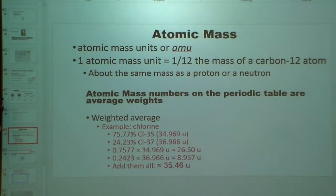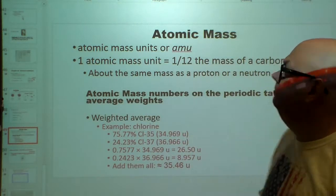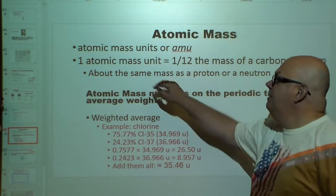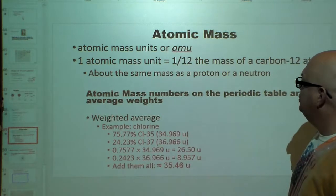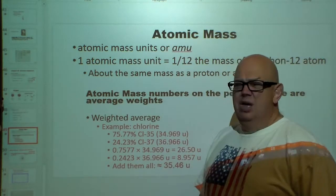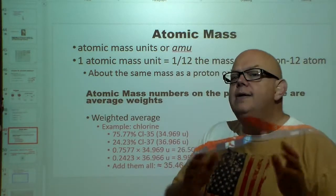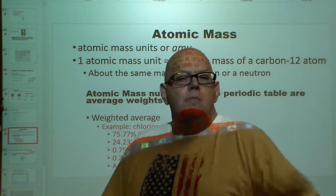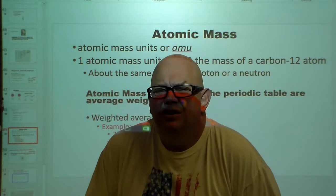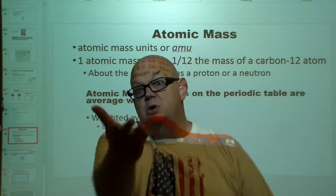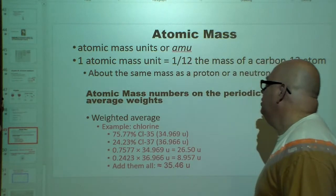Atomic mass — atomic mass units, or AMU. One atomic mass unit is equal to one twelfth the mass of a carbon-12 atom, about the same mass as a proton or a neutron. We had to pick a standard. Scientists had to pick a standard — how do we weigh all these atoms and elements? We started with the regular carbon-12 atom, and that's what we start with.